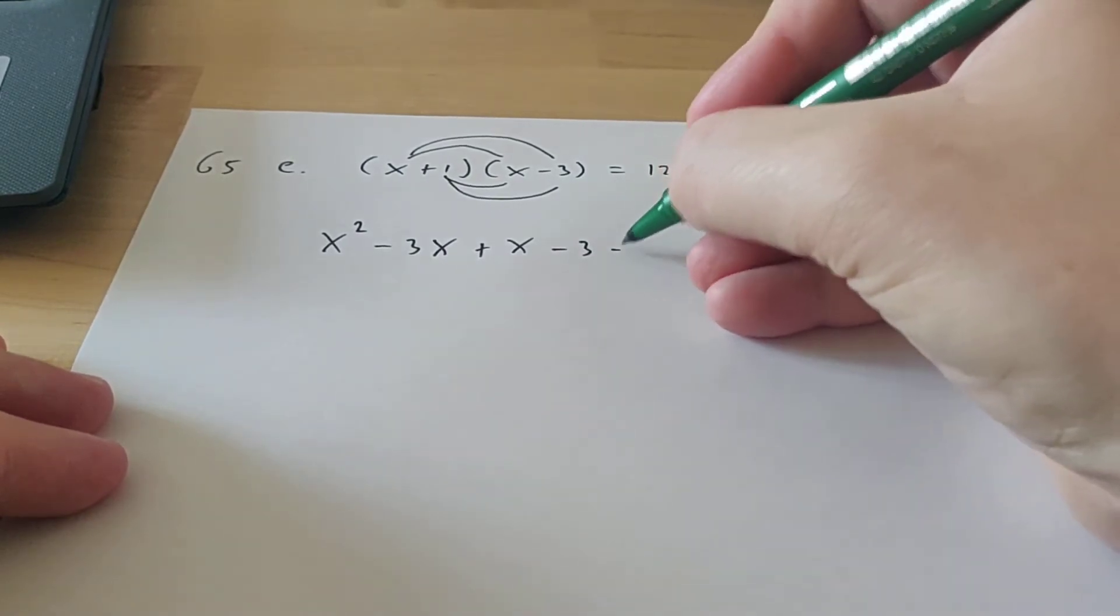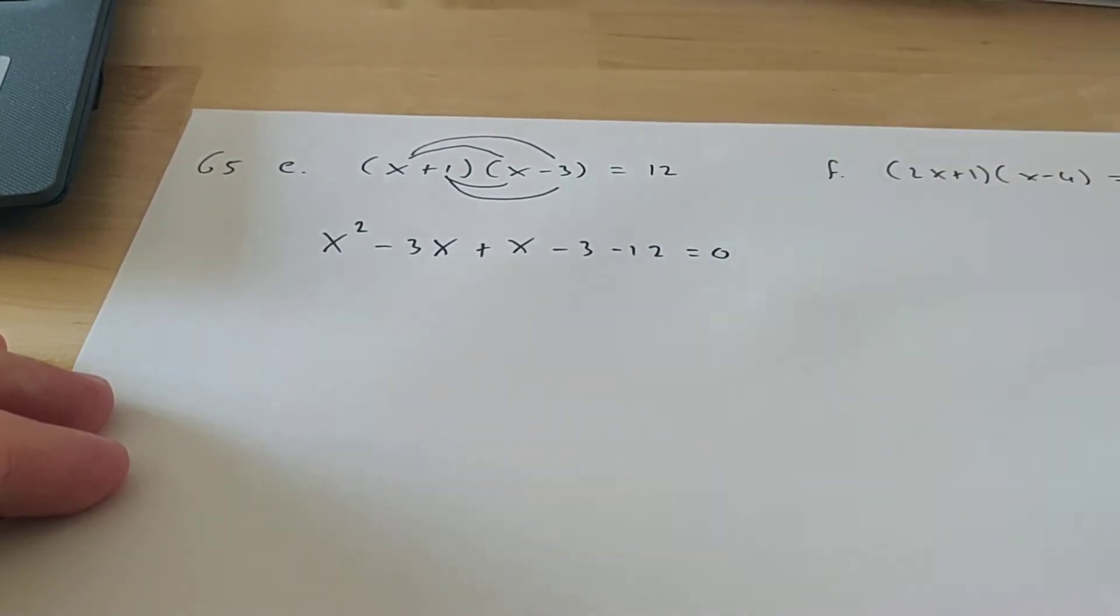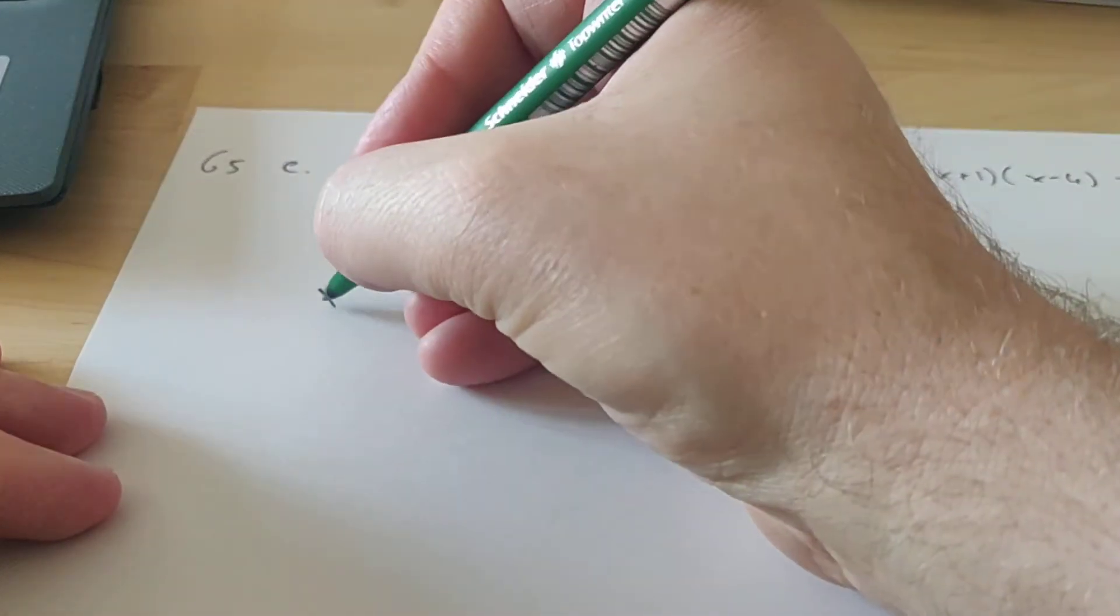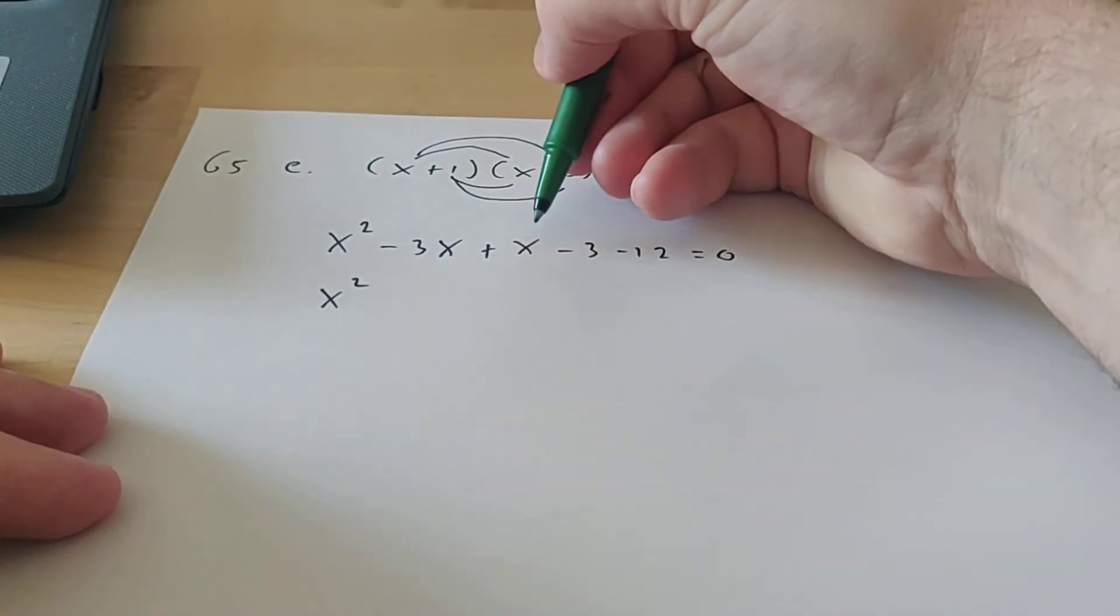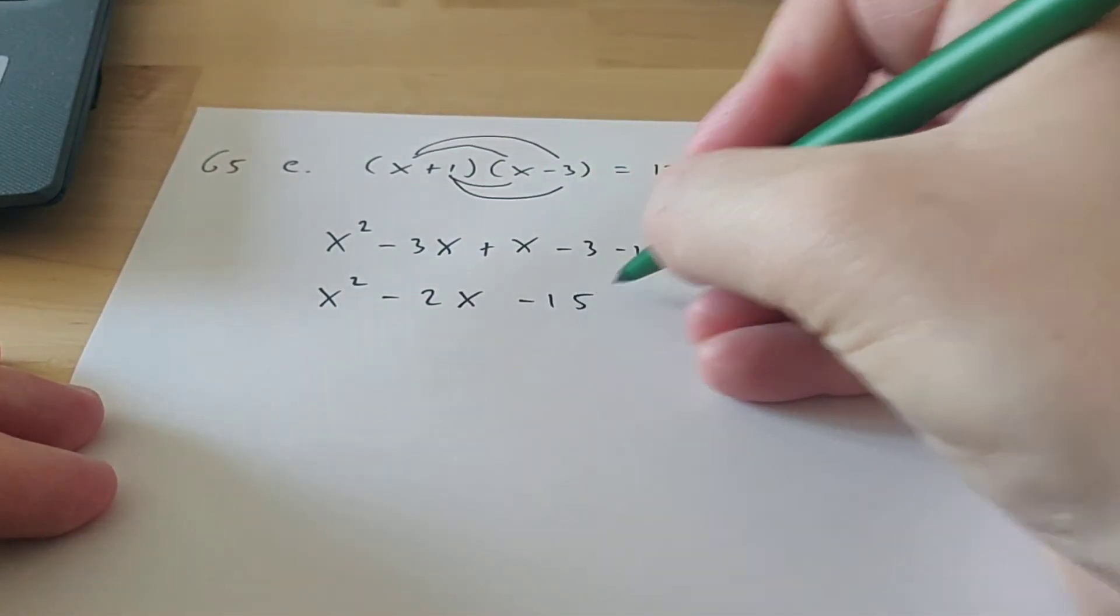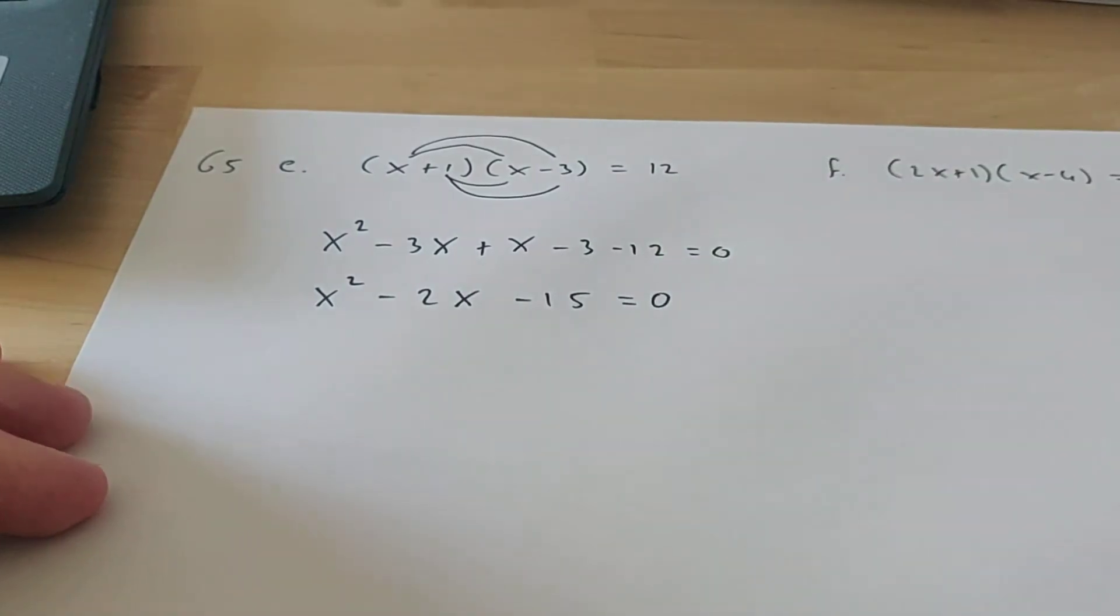And then we're going to move this 12 to the other side, so minus 12 equals 0. Now let's simplify this a bit before we continue. So we have x squared, and then minus 3 plus 1 is minus 2x. And minus 3 and minus 12 is minus 15.